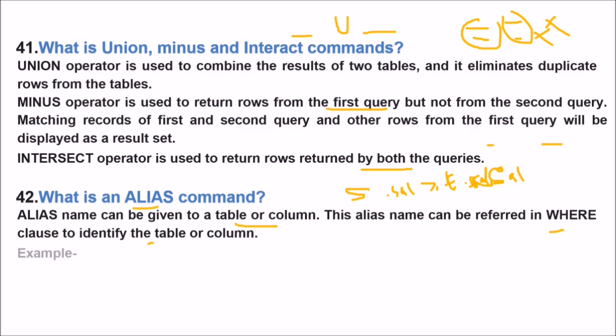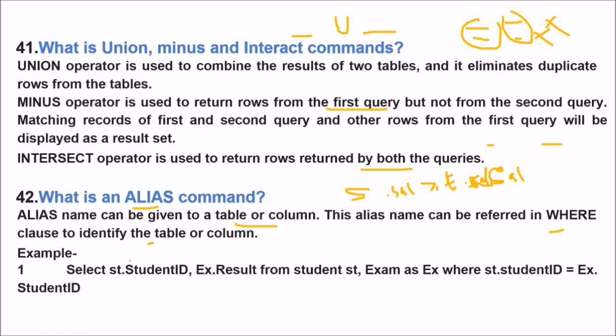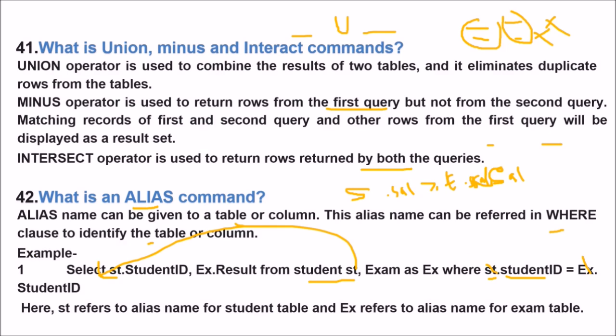These are the aliases. For example, you have st.studentid. You can have a result from student st and for example as ex, you can have st.studentid is equal to ex.studentid. So this st and ex they are the aliases here. St refers to the alias name for the student table and ex refers to the alias name of the exam table.